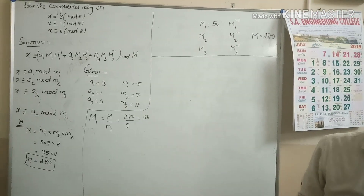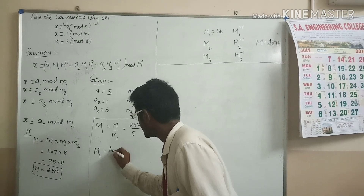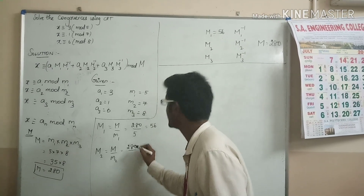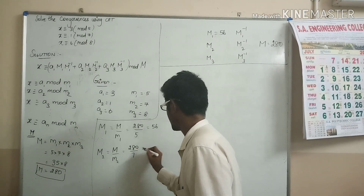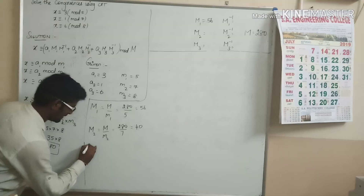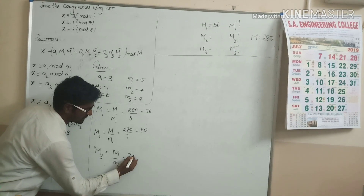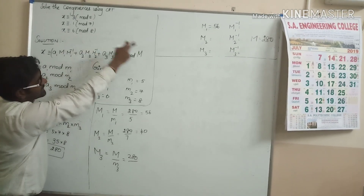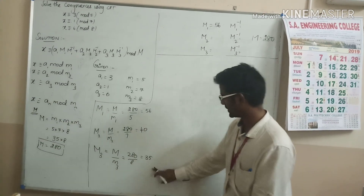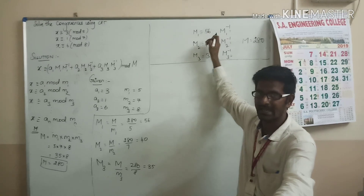Now we will calculate M2 and M3 as well. M2 = 280 ÷ m2 = 280 ÷ 7 = 40. M3 = 280 ÷ m3 = 280 ÷ 8 = 35. So we have M1 = 56, M2 = 40, M3 = 35.